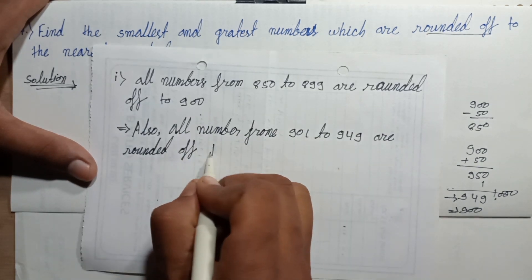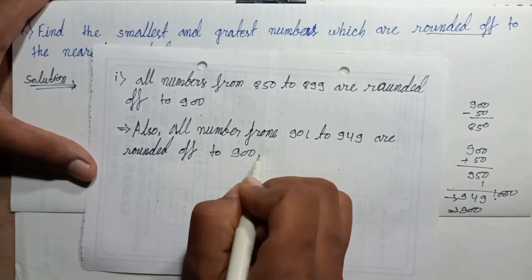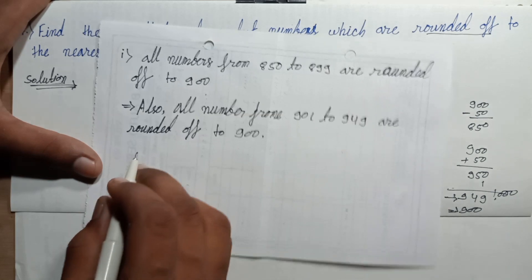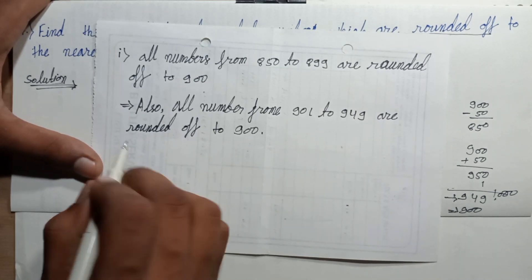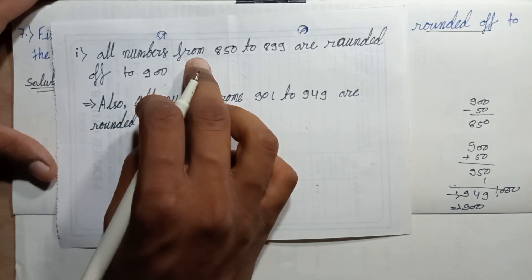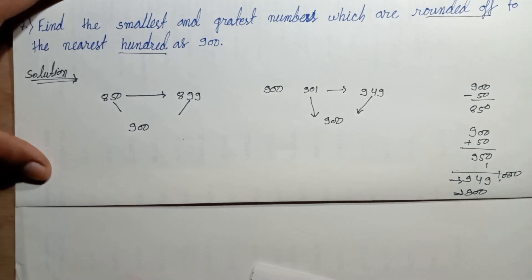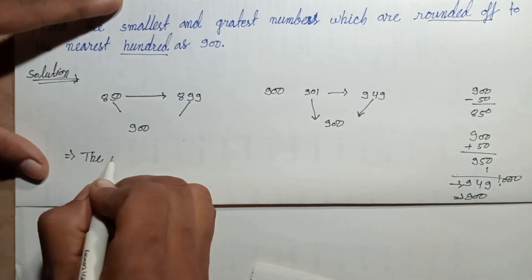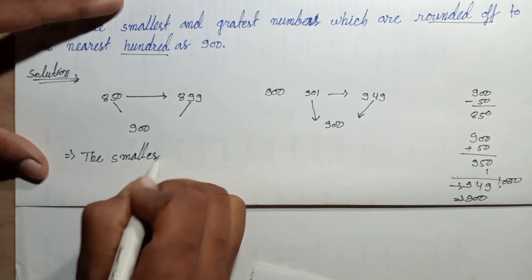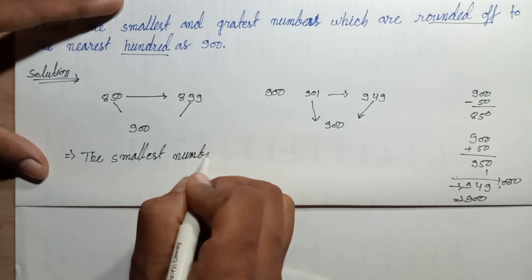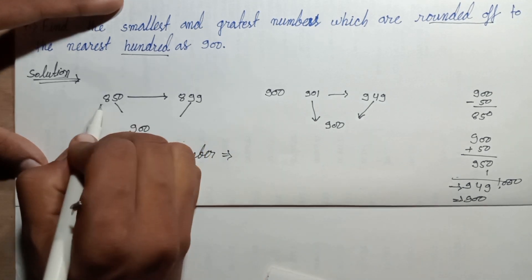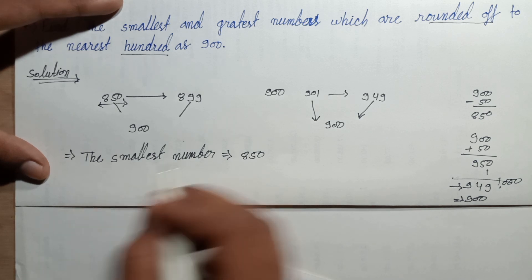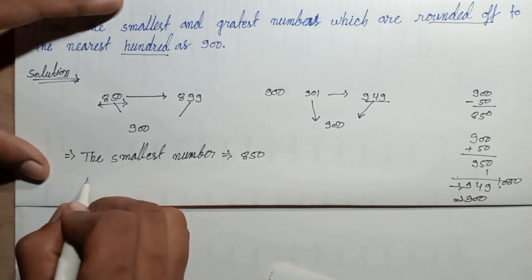The smallest number, the smallest number is 850 and the greatest number is 949.